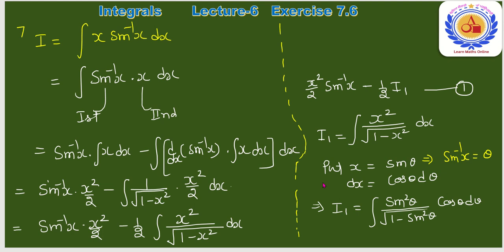x = sin θ put किया है, dx = cos θ dθ। सारी values substitute की। Cancellation के बाद ∫sin²θ dθ बचा। Identity लगाई: sin²θ = (1 − cos 2θ)/2।